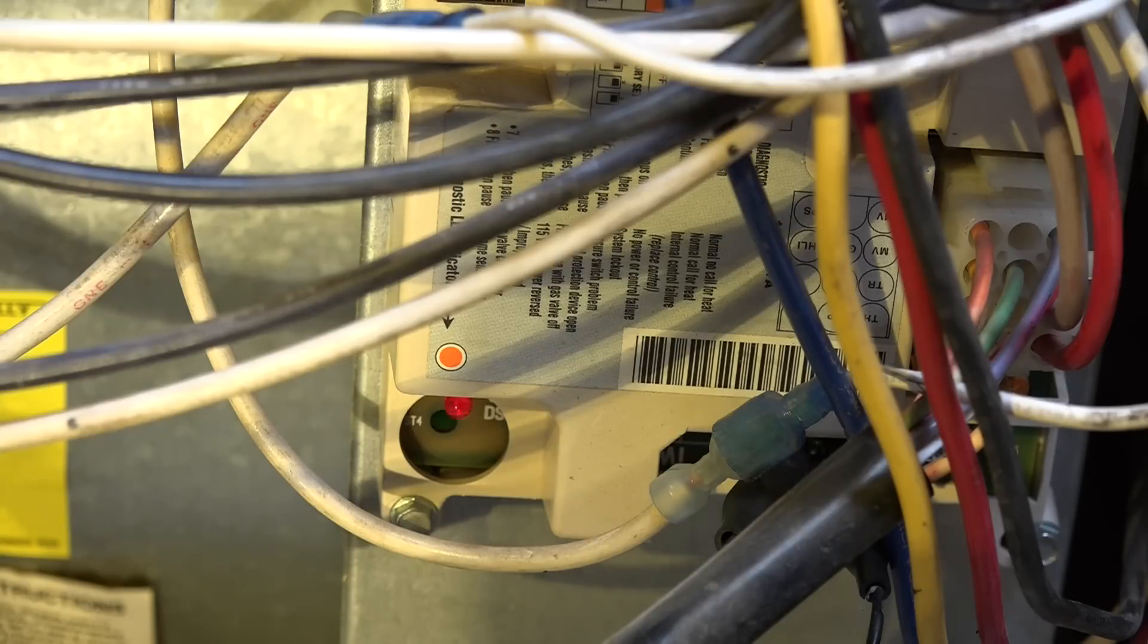Now if the pressure switch is stuck closed like the first video then it wouldn't turn on the inducer at all. But if the pressure switch didn't close the inducer stays on and it starts blinking a code.